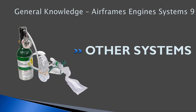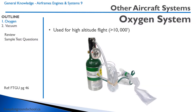Hello everyone, welcome back to FreePilotGroundSchool.ca. This is the ninth lesson on airframe engines and systems. We're going to be talking about oxygen systems. Oxygen systems are used in aircraft for high altitude flight above 10,000 feet. Between 10,000 and 13,000 feet you'd need it for more than 30 minutes, or you need it all the time beyond 13,000 feet.